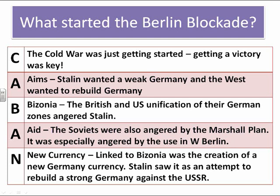Linked into that we're talking Bizonia: the British and the US unification of their zones angered Stalin. Going back to the first point, Stalin wants to weaken Germany. He sees the British and the US unifying Germany and to him that seems like they're trying to rebuild Germany to be a threat against the Soviet Union. Linked in with that is the aid — the Soviets were also angered by the Marshall Plan, especially by its use in West Berlin. How are East Germans going to feel about seeing capitalism working in West Berlin? One of the big triggers, though, is the new currency. Linked to Bizonia was the creation of a new German currency, and Stalin saw it as an attempt to rebuild a strong Germany against the USSR. And that's the final straw.